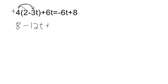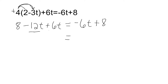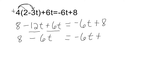We just write a single minus to represent that, and then we bring down this plus 6t. On the other side, we write negative 6t plus 8. Now on the left-hand side of our equation, we still have two terms that we can combine — the two t terms. So we're going to drop this 8 and combine negative 12 and positive 6, which is negative 6t. On the other side, we have negative 6t and positive 8.